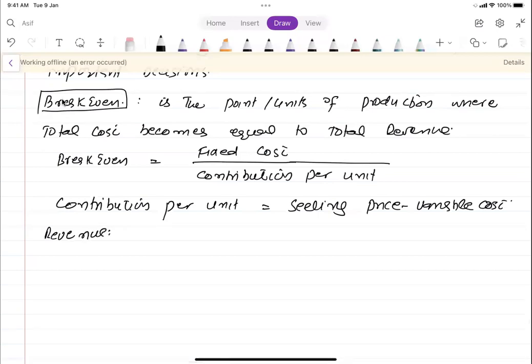Revenue is the income earned by business from sales. Revenue is calculated by the units sold multiplied by their price.